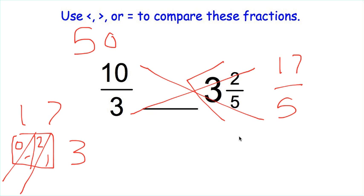3 times 1 is 3. Finish off our lattice box and we get 51. So 17 times 3 is 51. So we're comparing 50 to 51, and 51 is larger, which tells us 3 and 2 fifths is larger than 10 thirds.